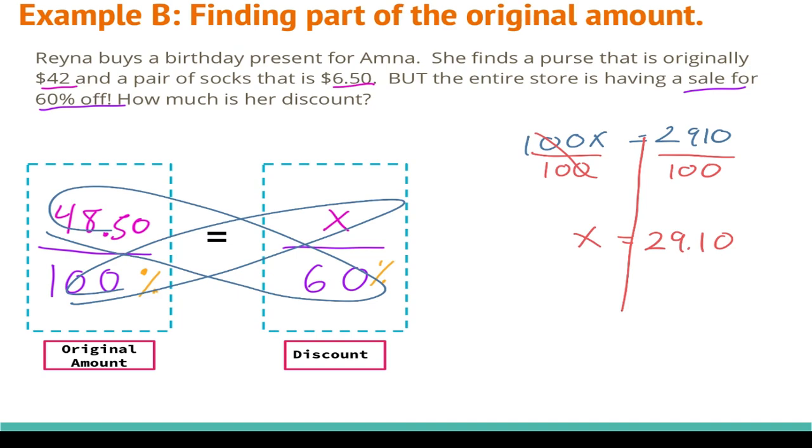Remember this is a word problem, so I need to have a word answer, so I've got my dollar sign there. Let's make sure that I've answered the question it asked me. It asks how much is the discount. So I'm not going to do any subtraction here, I'm not going to do adding here, because it only wants to know what the discount is, which is what I found, $29.10. Now let's take a look at example C.